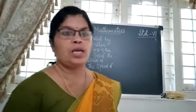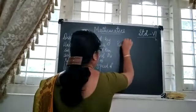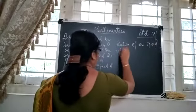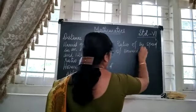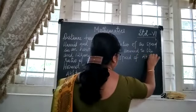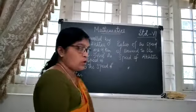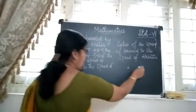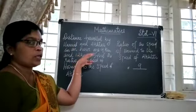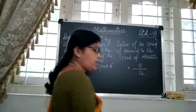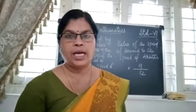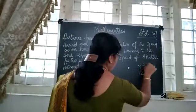So here we just have to write the ratio. The ratio of the speed of Hamid to the speed of Aftar is equal to 9 km divided by 12 km, that is 9 by 12. Both the numbers 9 and 12 are divisible by 3. So 3 is the common factor. Let us divide by 3 and make it into simplest form.